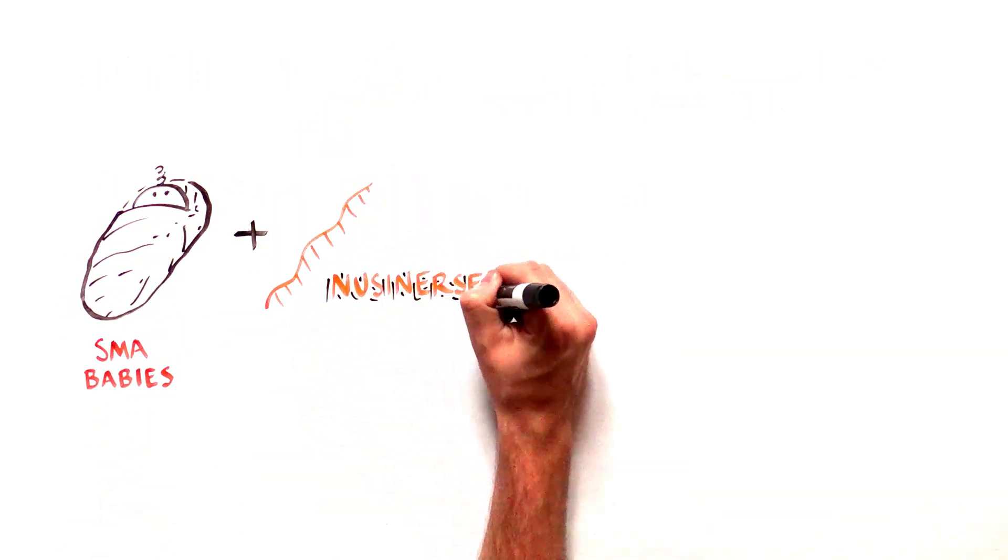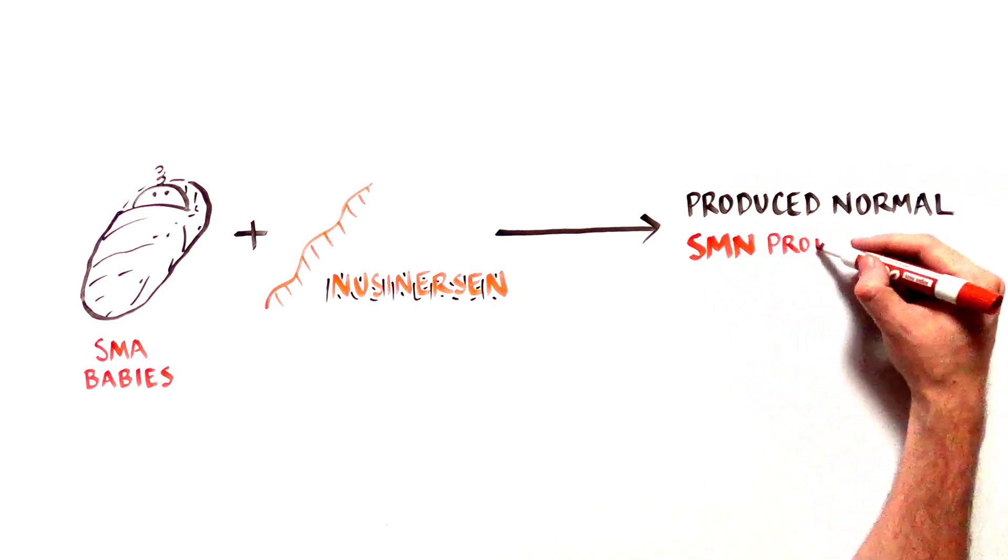By preventing exon 7 from being skipped, nusinersen reverses symptoms in SMA patients.